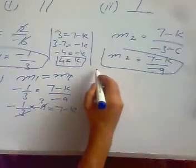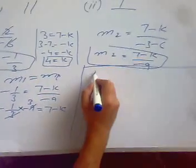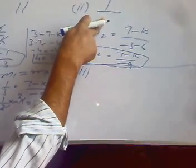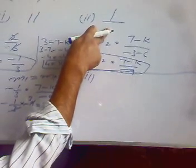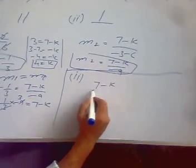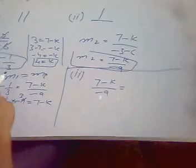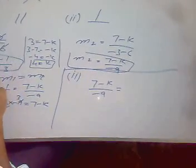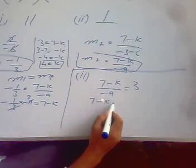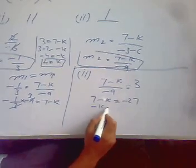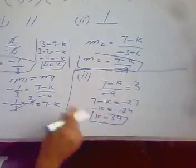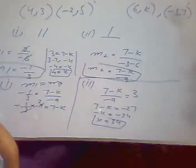For part 2, the lines are perpendicular, so m2 must be the negative reciprocal of m1. The negative reciprocal of -1/3 is 3. So (7 - k) / -9 = 3, giving 7 - k = -27, and k = 34. These are the values of k when the lines are parallel (k = 4) or perpendicular (k = 34).